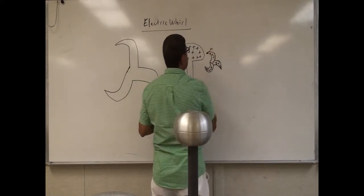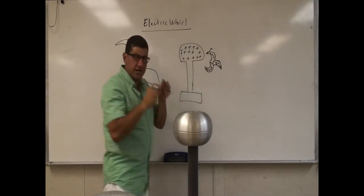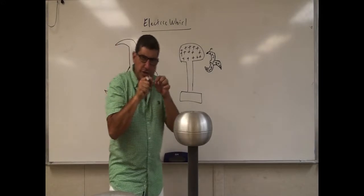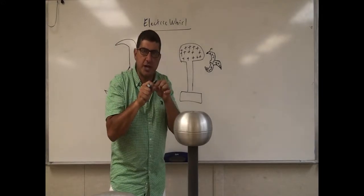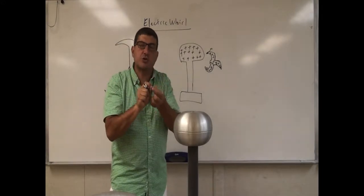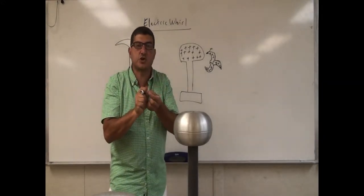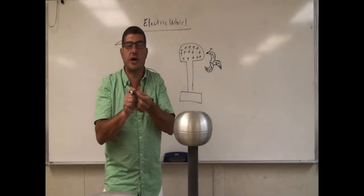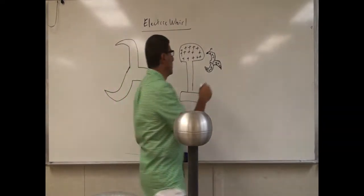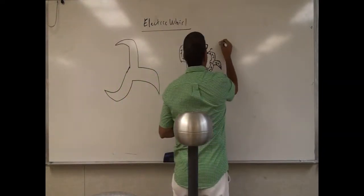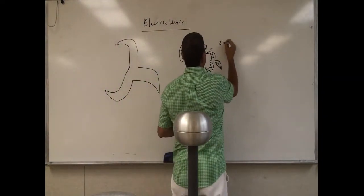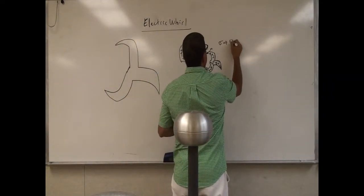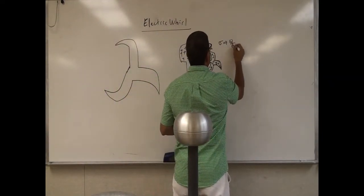The pointy end has a lot of charge accumulated into a small area, so its density of charge is very, very high. We call that the surface charge density, sigma. It is the charge per unit area.